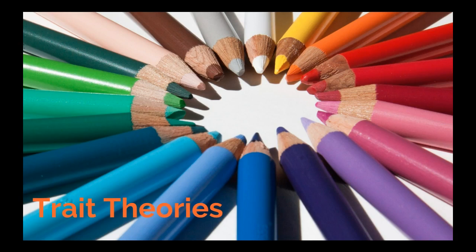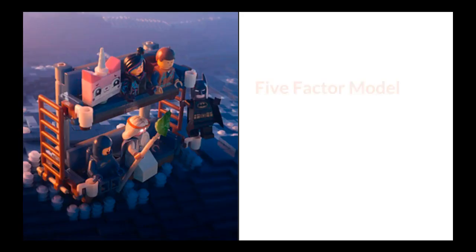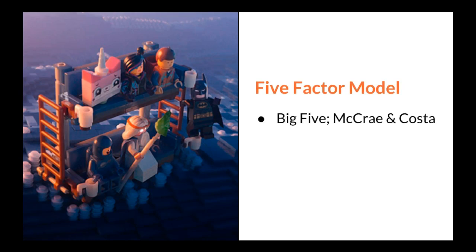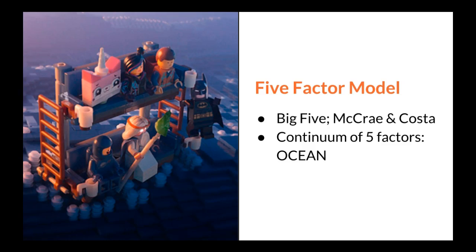The third approach to personality involves trait theories. Traits are personal qualities or characteristics that are stable across situations and are used to describe or explain personality. I will only discuss one modern trait theory. The five factor model, also referred to as the Big Five by McCrae and Costa, holds that personality is based on a continuum of five factors. The acronym OCEAN is the best way to remember the five traits, as in the scene of the Lego movie where they are floating in the ocean on the Devil Tecker couch.